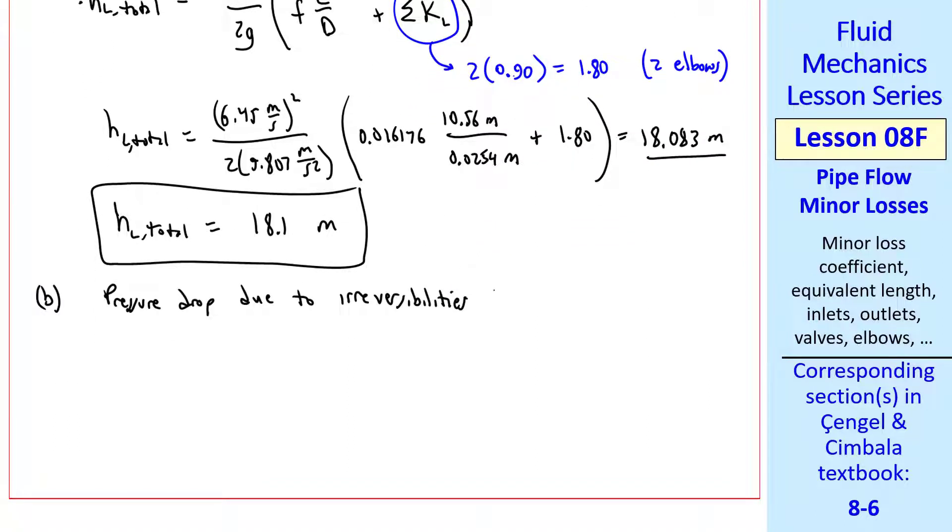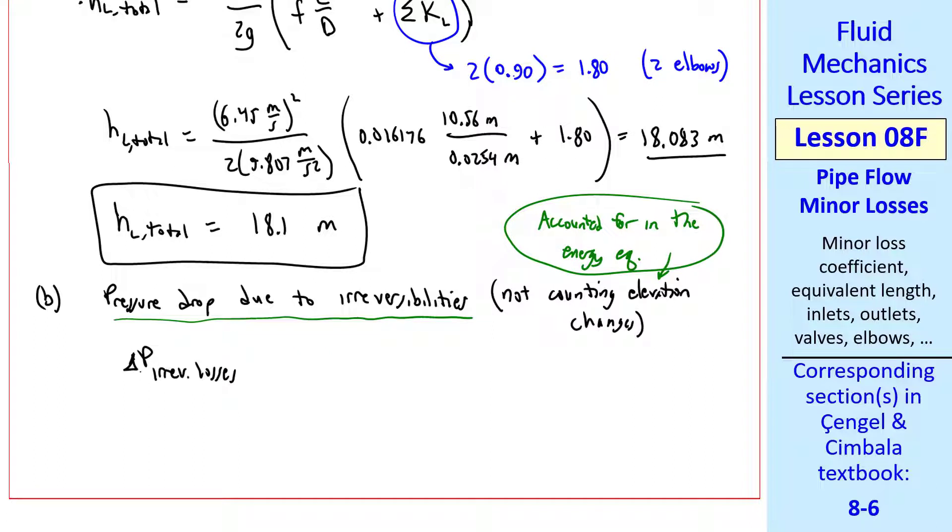The pressure drop due to irreversibilities, not counting elevation changes, these are accounted for in the energy equation. Here we just want the pressure drop due to these irreversibilities. So delta P irreversible losses is rho G times the total irreversible head loss.